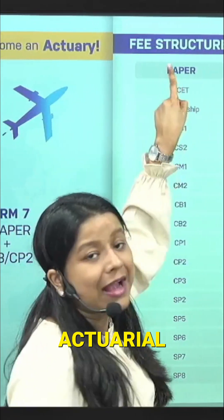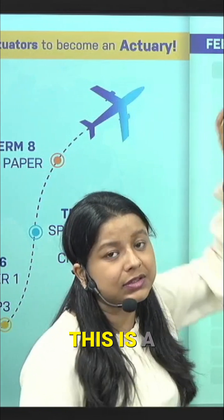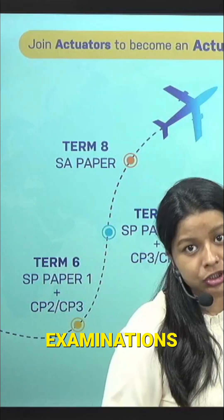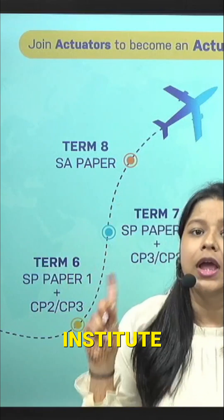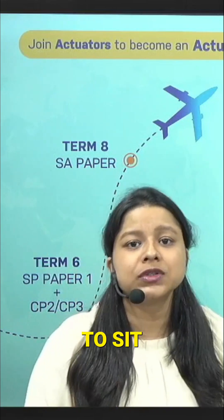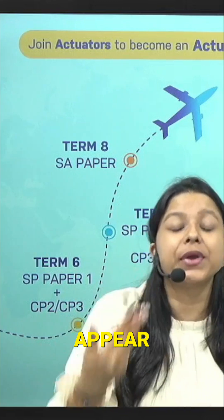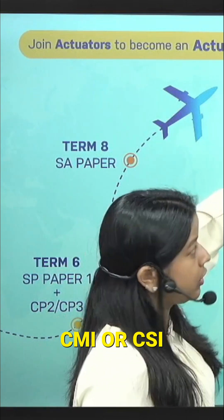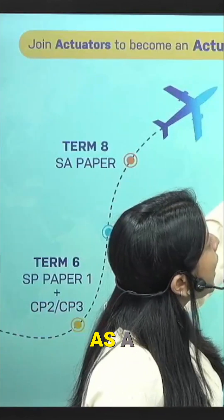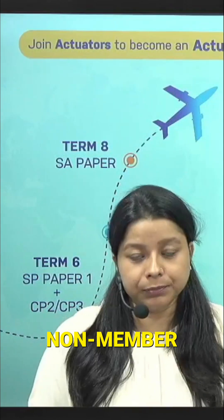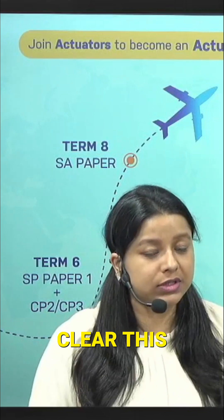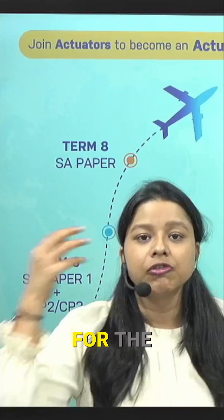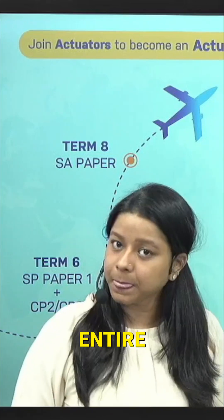There is something called the Actuarial Common Entrance Test. This is a basic entrance test that you have to sit for when you appear for IEI examinations. In case of IFOA, which is the UK Institute, you don't have to sit for any entrance test. You can appear for either CM1 or CS1 as a non-member. Once you clear these papers you can take the membership of the institute and appear for the next papers. So this is the entire structure.